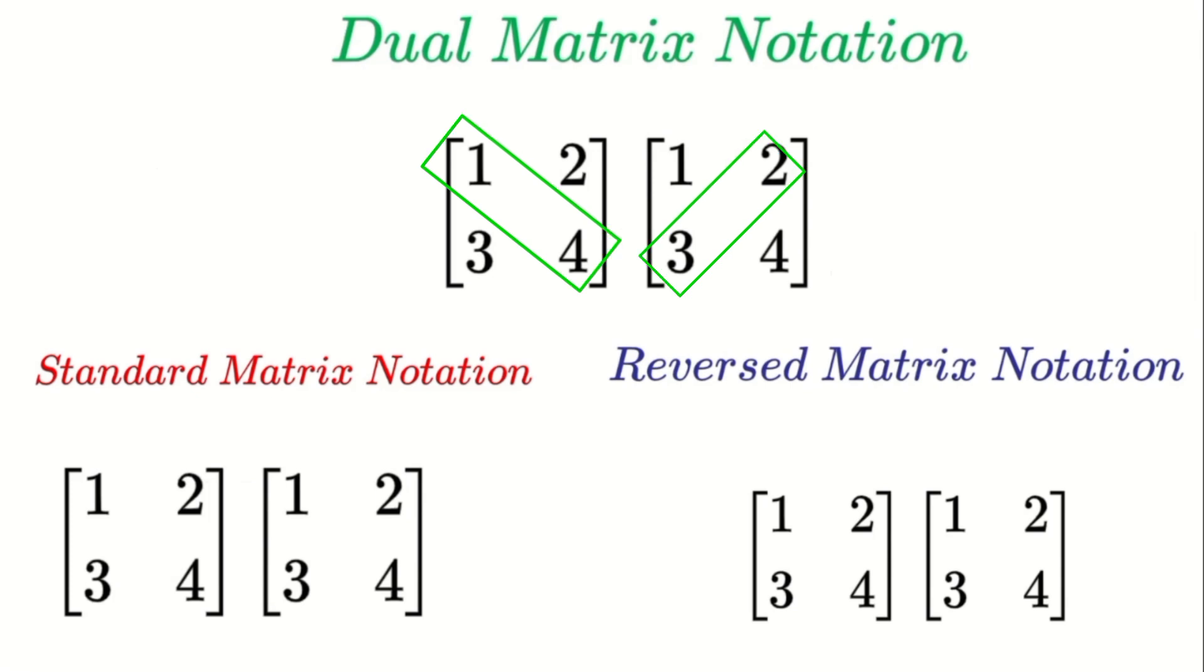If you prefer a method closer to standard matrix multiplication, you can use column-to-row multiplication instead of the traditional row-to-column multiplication. This alternative method aligns with the structure of standard operations but offers a fresh perspective for computations.